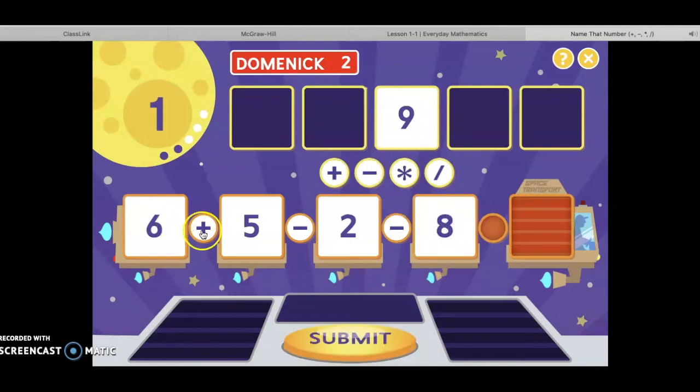Let's see. These are all addition and subtraction, so we just go left to right. Six plus five is eleven, minus two is nine, minus eight equals one. Let's see if we're correct.